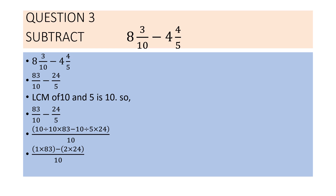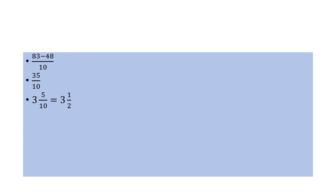As the denominators are not the same, we find the LCM of 5 and 10, which is 10. Applying the formula: 10 divided by 10 into 83, minus 10 divided by 5 into 24, upon 10. This gives 1 into 83 minus 2 into 24 by 10, which is 83 minus 48 by 10, giving 35 by 10.